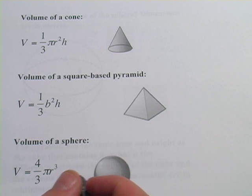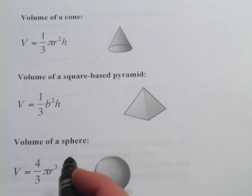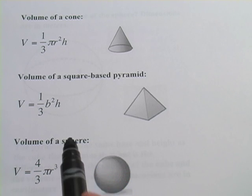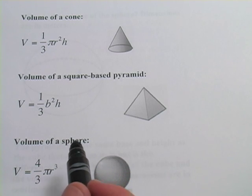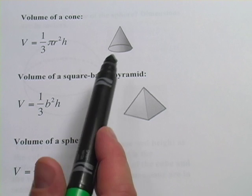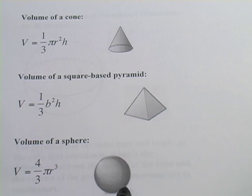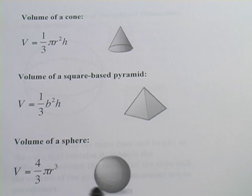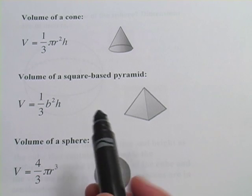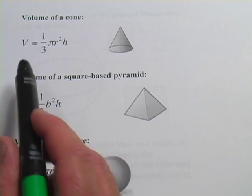The problems we're going to do next have to do with calculating the volume of some shapes: cones, pyramids, and spheres. These problems get a little bit tricky. The formulas look kind of complicated.